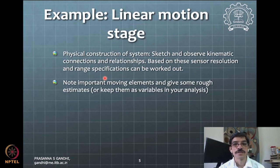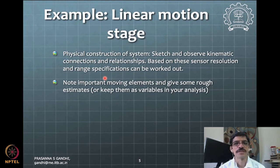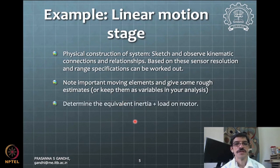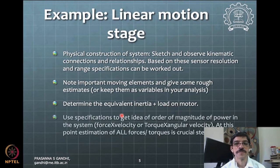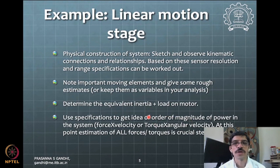The next step is noting the moving elements in the system and giving rough estimates of their mass. These can be kept as variables depending on the application. Then you can determine the equivalent inertia or load inertia on the motor, which helps get the motor specifications. One approach is to simulate the entire process you want to achieve.